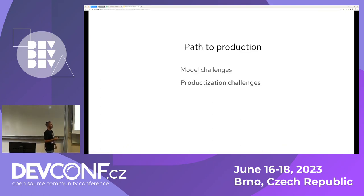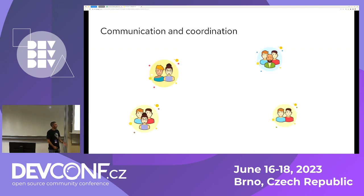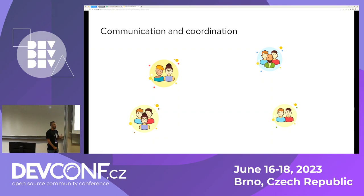Now I'm going to talk about the productization strategies and what we learned along the way. Let's start with communication — it's not just for machine learning projects, it applies to any project. If you have many groups working on the same project, many of them will have issues, blockers, and timing conflicts, and you have to collaborate and coordinate.